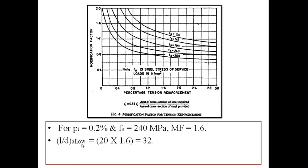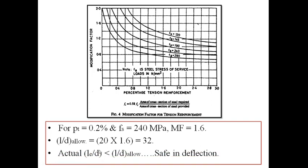Therefore, the L/d allowable for a simply supported element is 20 into modification factor 1.6, which equals 32. The actual L effective by d is 30, which is less than the L/d allowable of 32. Therefore, the slab is safe in deflection.